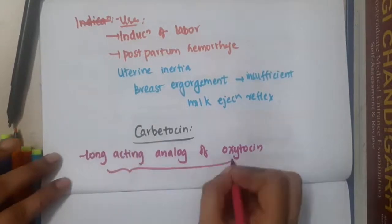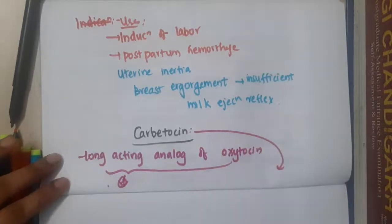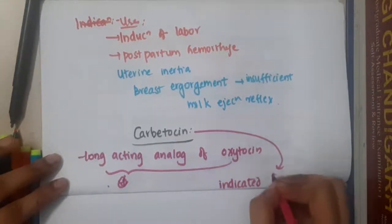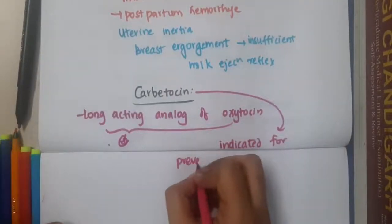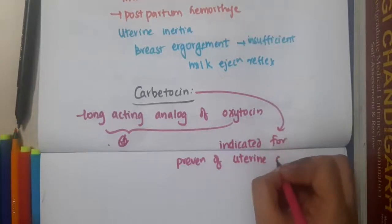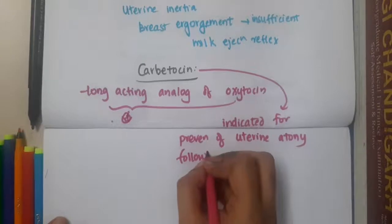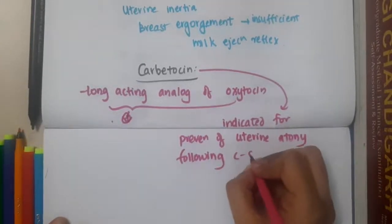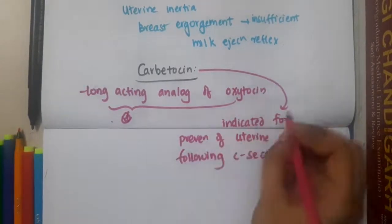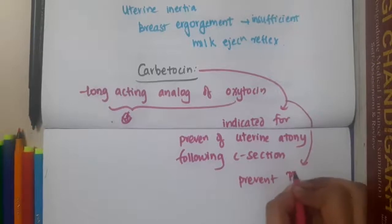What does this do? Carbytocin is mainly indicated for prevention of uterine atony following caesarean section. It is also used to prevent postpartum hemorrhage.